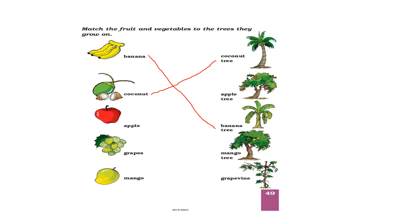Okay, the next one is an apple. Apple should be matched with apple tree. The next one is bunch of grapes. Grapes should be matched with grapevine. Children, understand one thing: this is not a tree. Grapevine is not a tree, it's a climber.